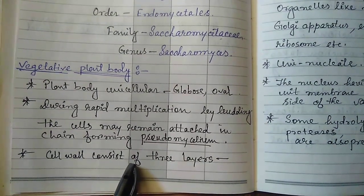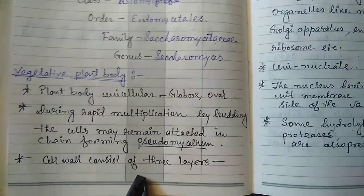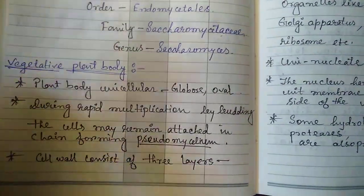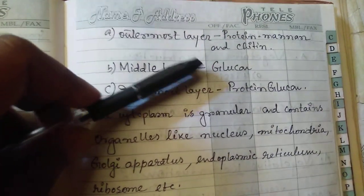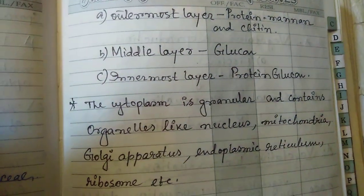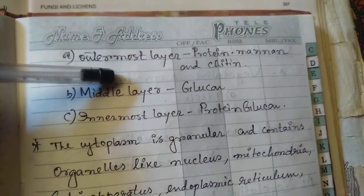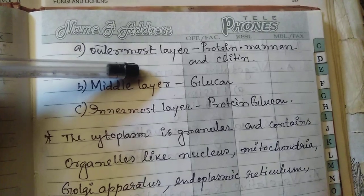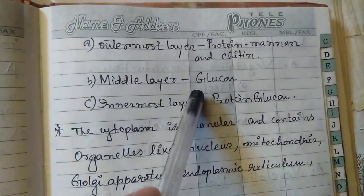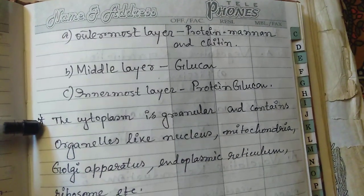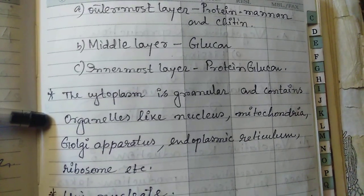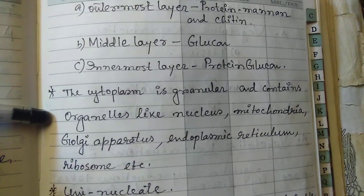The cell wall protects the cell and absorbs nutrients from the outer environment. The cell wall of fungi consists of three layers: the outermost layer consists of protein, mannan, and chitin; the middle layer consists of glucan; and the innermost layer is protein glucan.